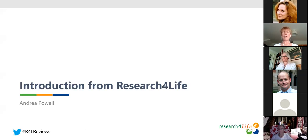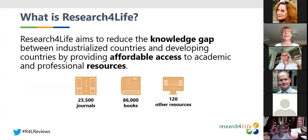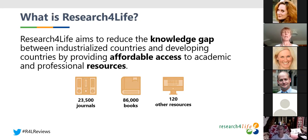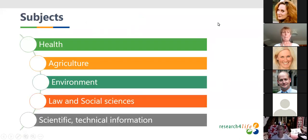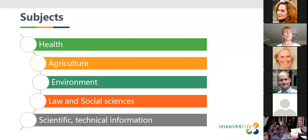A very brief introduction to Research for Life. This slide always makes me smile because it's always out of date, as we are adding new content to the platform all the time. The program aims to reduce the knowledge gap between industrialized countries and developing countries by providing affordable access to academic and professional resources. The subjects covered include pretty much any research area you can think of. Since its early days, when its original focus was on health and then agriculture, Research for Life has expanded to include almost every discipline, including social sciences, chemistry, physics, hard sciences, and computer sciences.